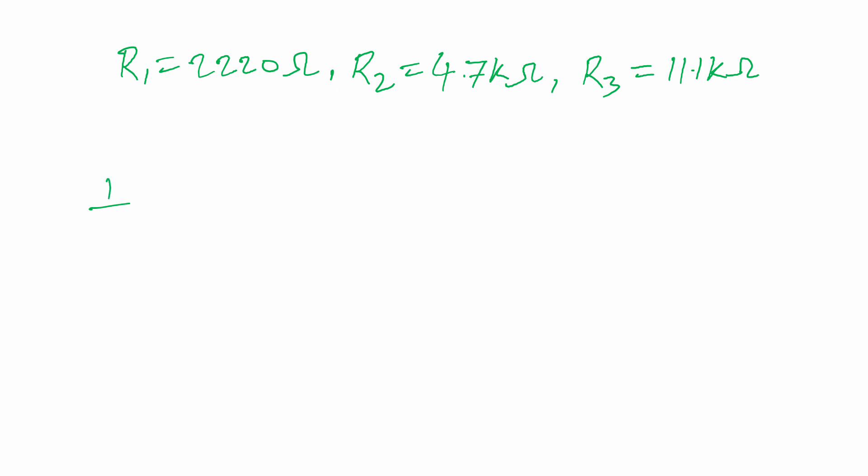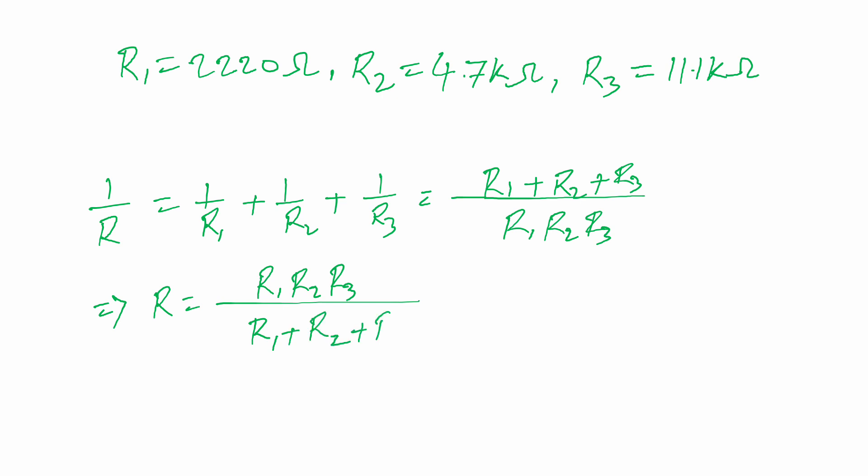So total resistance, 1 divided by R is equal to 1 divided by R1 plus 1 divided by R2 plus 1 divided by R3. Or R is equal to R1, R2, R3 divided by R1 plus R2 plus R3.